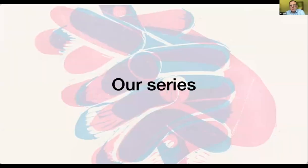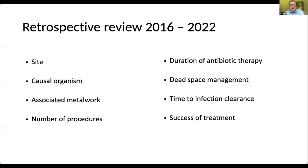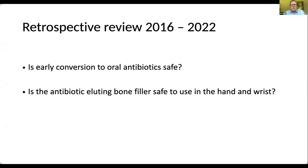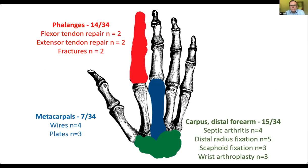I'll take you through our series briefly. We did a retrospective chart review of patients over six years, recording various demographics and treatment profiles. While initiating my practice, I felt it important to demonstrate that the antibiotic-eluting bone filler we were using was safe in the hand and wrist — there was very little literature about that — and whether we'd be able to treat patients with shorter courses of antibiotics. My two questions were: can we convert patients to oral antibiotics safely, and was antibiotic-eluting bone filler safe to use in the hand and wrist?